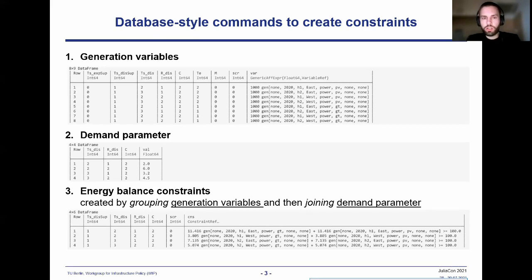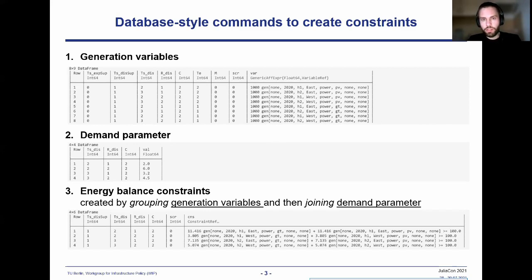This example also gives insight into how automatic scaling in AnyMod is achieved. Looking into the generation variables, instead of directly placing the generation variable in the column, an affine expression is used that also includes the scaling factors for the variables. This results in a more favorable range of coefficients and factors in the final model.